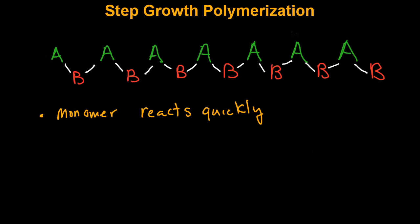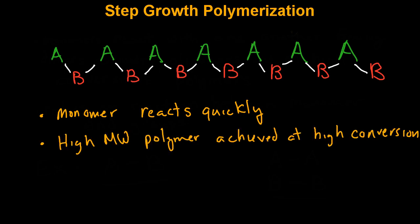Characteristics of step growth polymerization are that first, monomer reacts very quickly. High molecular weight polymer is only achieved at high conversions. The degree of polymerization is often defined by the equation where DP is equivalent to 1 over 1 minus p, in which p is conversion.